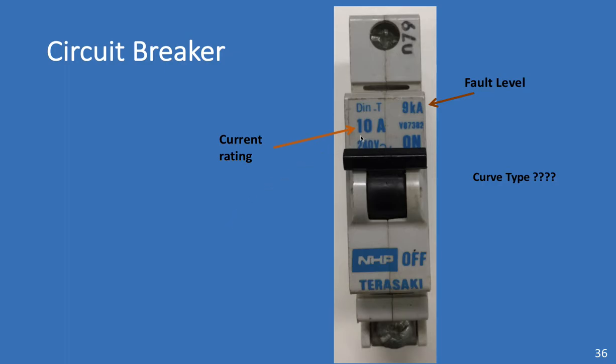So we have a current rating which is the most important thing. And we have a fault level rating. You'll notice there's nothing here to tell us what kind of trip curve or curve type this circuit breaker has. And if it doesn't tell us, then we have to assume it's a C curve trip. So, without any other information, we're going to have to consider this a C curve.